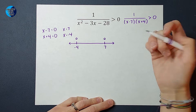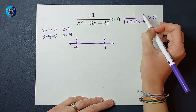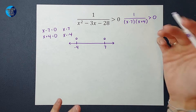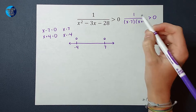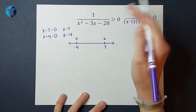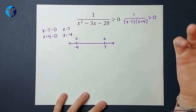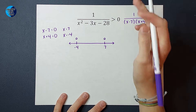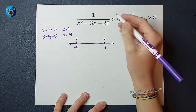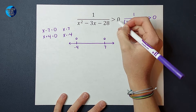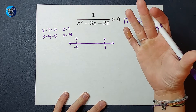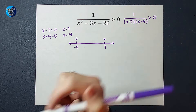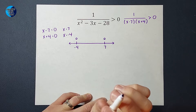Now, if you have a different numerator — it's not just a one, you have numbers that aren't in the denominator — you will look at your sign to see if it's an open or closed circle. If you are greater than or less than, it's an open circle. If you're greater than or equal to, or less than or equal to, it's a closed circle. I will link an example with one of those in the corner.